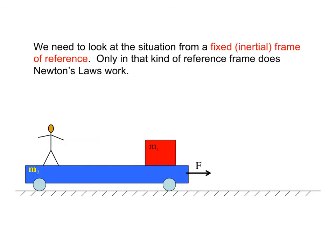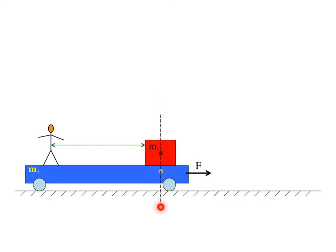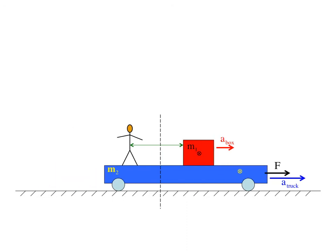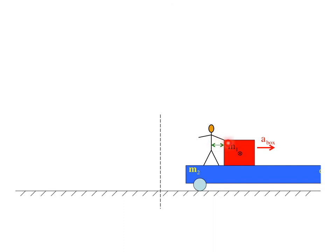Here we are back to where we started. I've identified a fixed frame of reference — just a line — and identified where the box and the bed are relative to that line. Now we're going to do an animation to see what happens to the box relative to the man, the line, and the bed as this force pulls the bed to the right. And here we are: the box is now basically on top of the man. The man has moved with the truck to the right relative to our fixed frame, and so has the box — which means the box has actually accelerated to the right along with the truck. The truck bed has dragged the box along with it, not at the same acceleration, but nevertheless to the right. That means there has to be a force motivating the box to the right, and that force is kinetic friction.